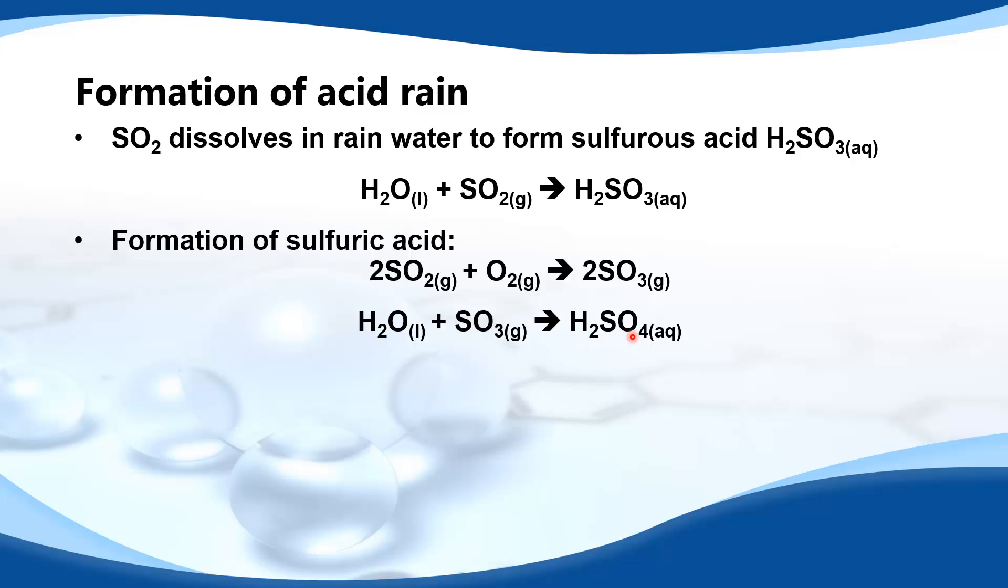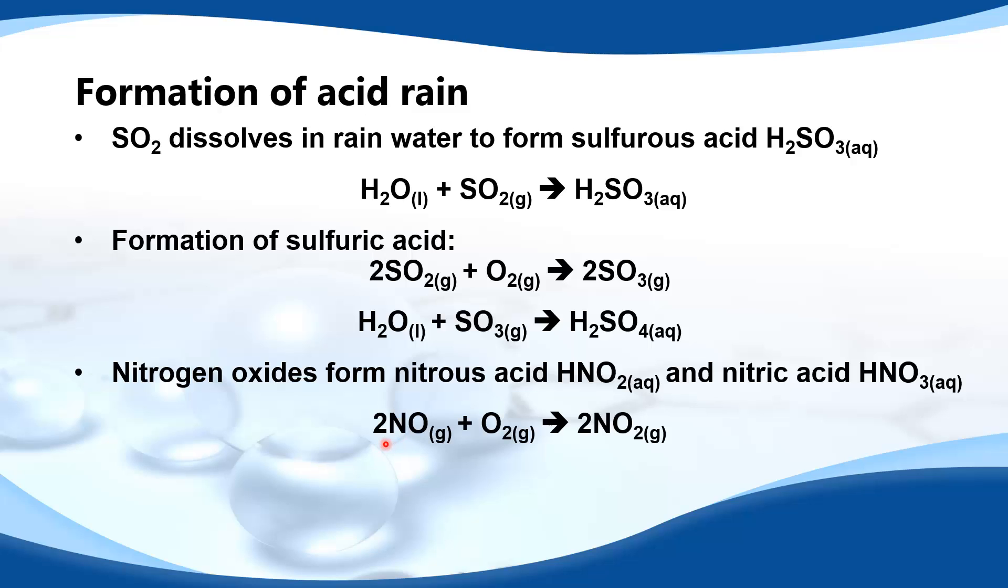Another source of acid rain is nitrogen oxides. Nitrogen oxides form nitrous acid, HNO2, and nitric acid, HNO3. In this equation, nitrogen monoxide is reacting with oxygen to form nitrogen dioxide.